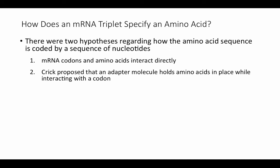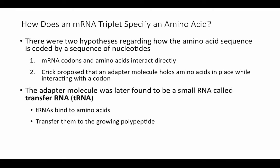Francis Crick proposed that there's going to be some sort of an intermediary — an adapter molecule that's going to hold amino acids in place while interacting with a codon and then joining amino acids together into the polypeptide chain. We now know that Crick's hypothesis is correct, and that adapter molecule was found to be a small RNA called transfer RNA. So tRNAs bind to amino acids and then transfer them to the growing polypeptide.